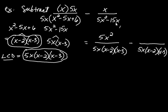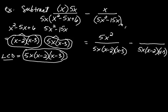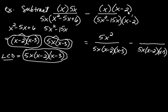For 5x squared minus 15x, take its factored form — 5x times x minus 3 — and compare it with the LCD. There's already a 5x and an x minus 3, but it's clearly missing a factor of x minus 2. So multiply by x minus 2. Notice the parentheses around the whole denominator — I'm multiplying the whole thing by x minus 2, not just part of it. Likewise, multiply the whole numerator by x minus 2: x times x is x squared, and negative 2x, so the numerator becomes x squared minus 2x. Now both denominators are the same.